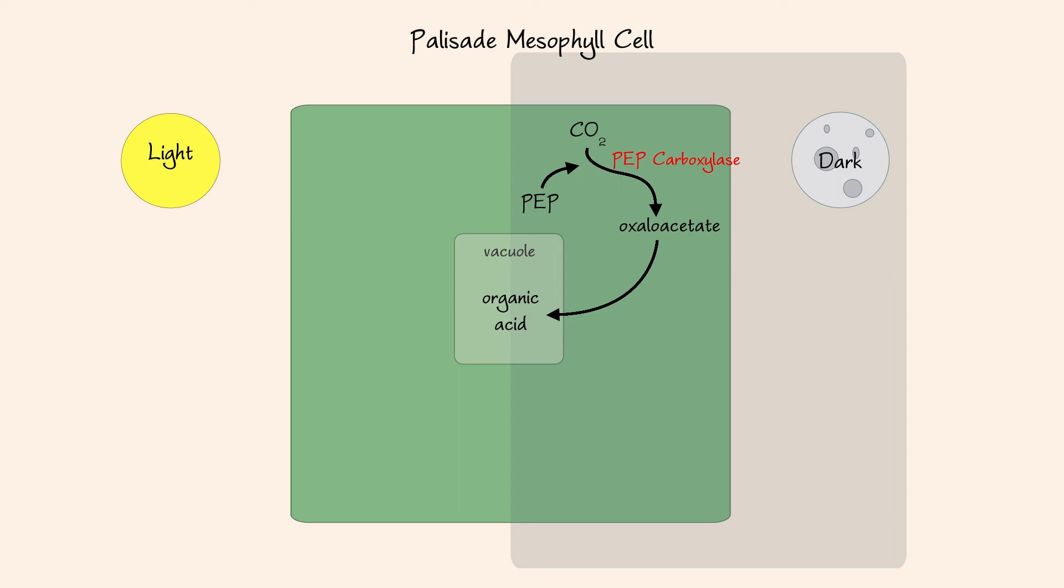In the morning, the organic acid exits the vacuole and releases carbon dioxide and PEP. The carbon dioxide can be incorporated into the Calvin cycle to produce G3P, whereas the PEP will be reused during the night to carry another molecule of carbon dioxide.